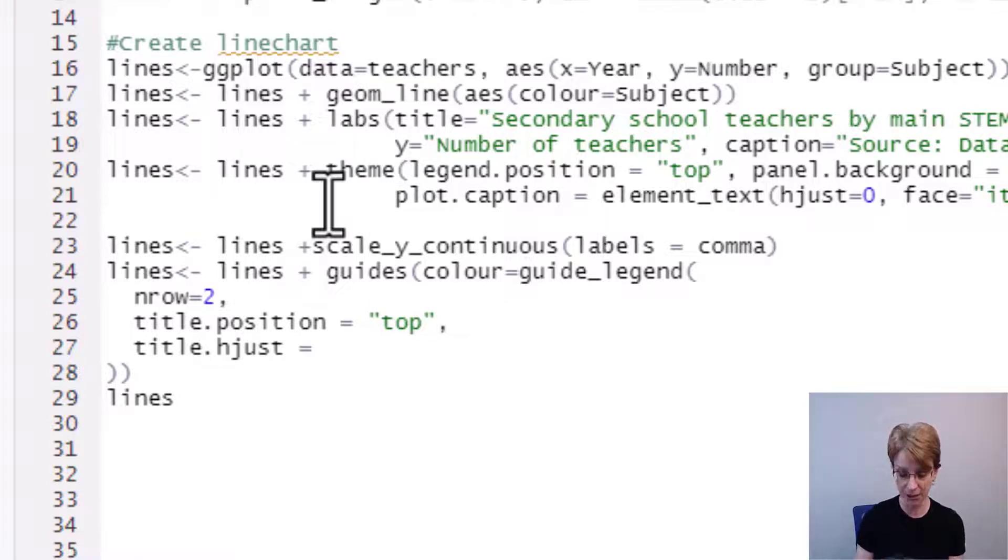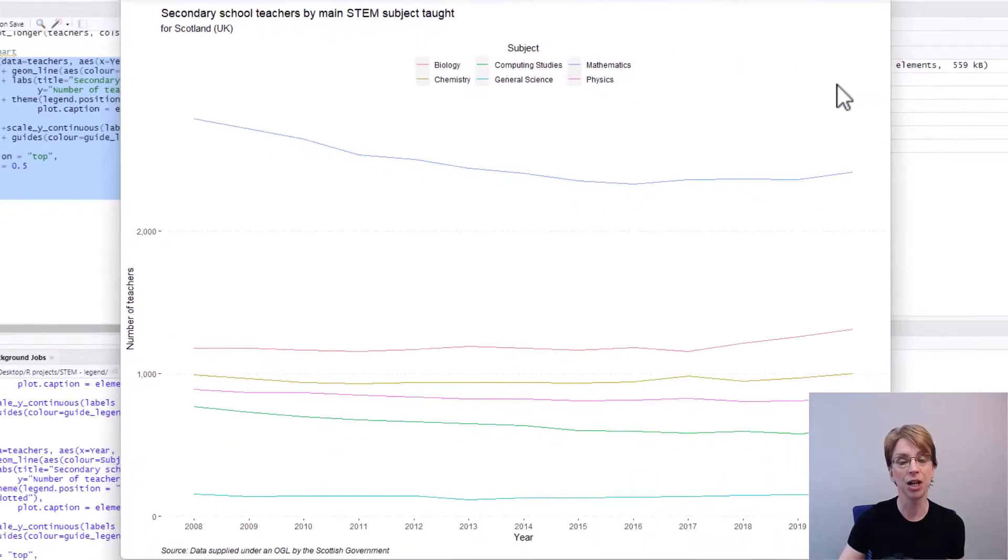And here I put 0.5 it is 0.5 because left justified is represented by 0 and right justified is represented by 1 therefore to get the title in the middle we put 0.5. If I now run the code again you can see that we have two rows and the word subject sits in the middle.